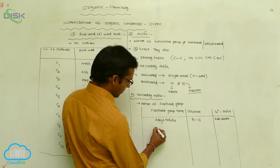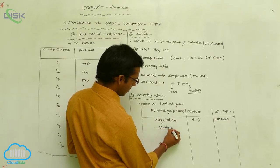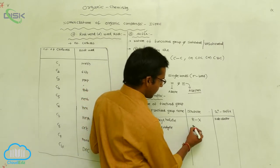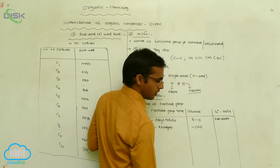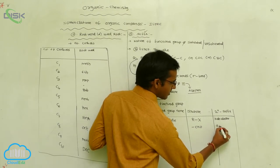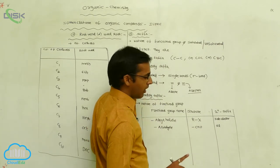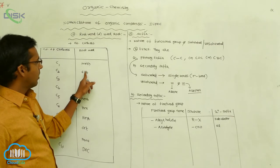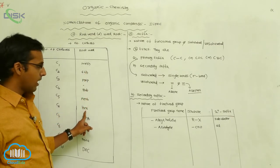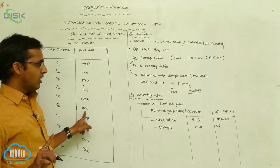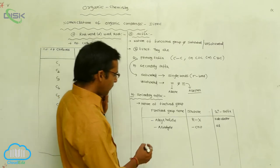If the functional group is an aldehyde, its general formula is –CHO. The secondary suffix for aldehydes is 'al'. So the names become methanal, ethanal, propanal, butanal, pentanal, hexanal — the suffix is always 'al'.